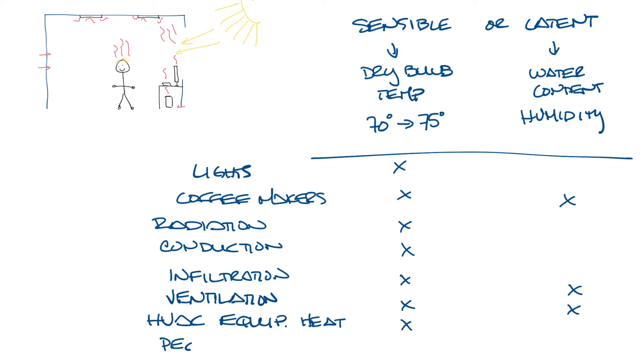Then there's the people in the building. People raise both the sensible and latent load. Did you know that the average person produces about the same sensible heat as a 75 to 100 watt light bulb, depending on what they're doing? All these things can add up to a lot of load to offset with your HVAC system.